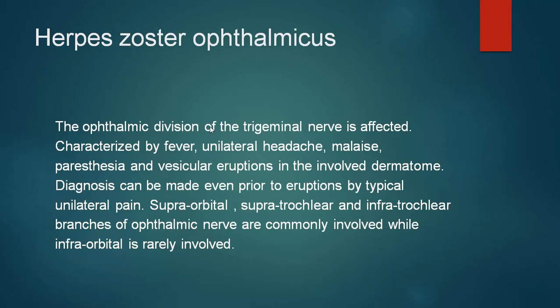Another manifestation of viral disease is herpes zoster ophthalmicus, where the ophthalmic division of the trigeminal nerve is affected. This disease may be characterized by fever, unilateral headache, malaise, paresthesia and vesicular eruptions in the involved dermatome. Sometimes you can make a diagnosis even prior to eruptions based on typical unilateral pain. The nerves commonly involved are the supraorbital, supratrochlear and infratrochlear branches, while the infraorbital is rarely involved.